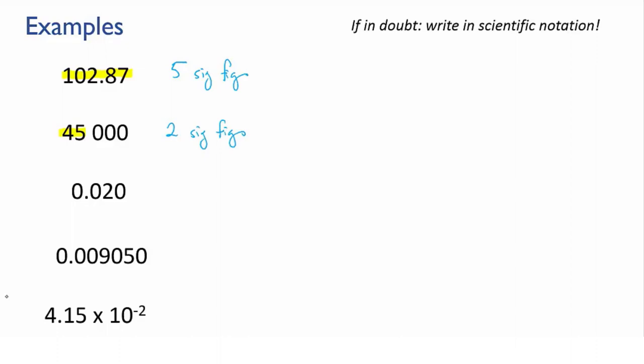0.020. This number starts with two leading zeros, which are not significant. We start counting when we get to the first non-zero digit, that's the 2, and the trailing zero is significant this time because the number has a decimal point. So two sig figs here.